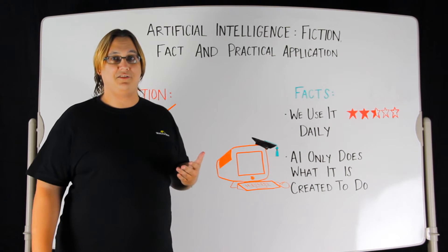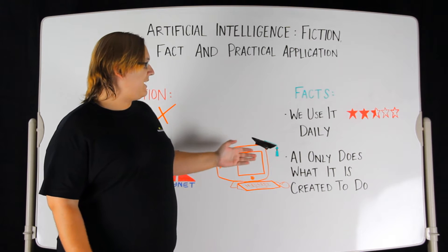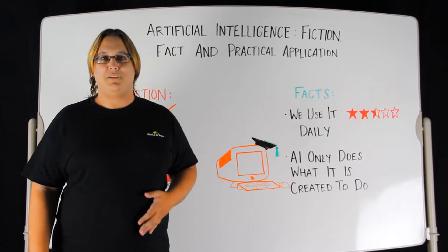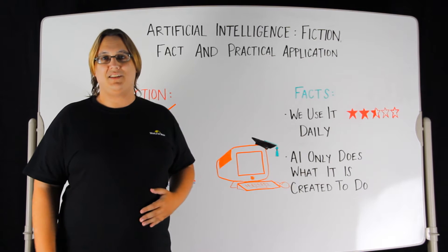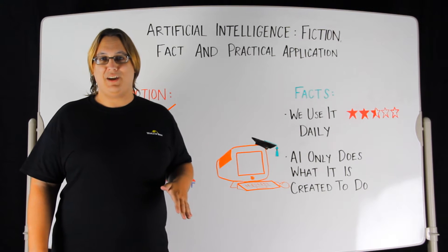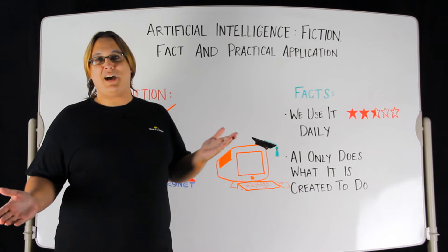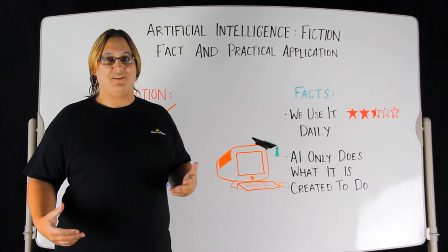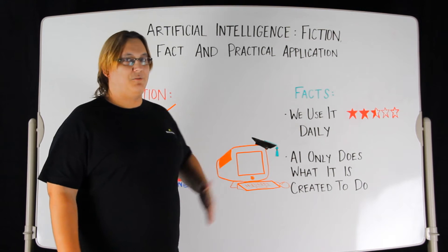On top of that, AI is only ever gonna do what it's created to do. If somebody writes AI to solve a maze, it's not gonna turn around and learn how to make pancakes. It's not gonna turn around and learn how to stab you in the back. These things are not stuff you have to worry about. It's only gonna do what we teach it to do.